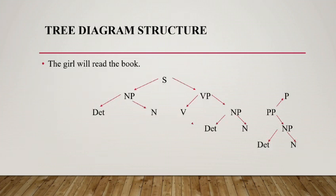Now I will discuss tree diagram structure. A tree diagram means a sentence is made into a tree-like structure. For example, the sentence 'the girl will read the book.' This sentence is divided into two parts: noun phrase and verb phrase. Noun phrase is divided into two parts: determiner and noun. Verb phrase is divided into three parts: auxiliary word, verb, and noun phrase. Noun phrase is further divided into determiner and noun.